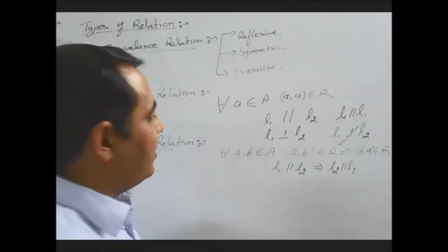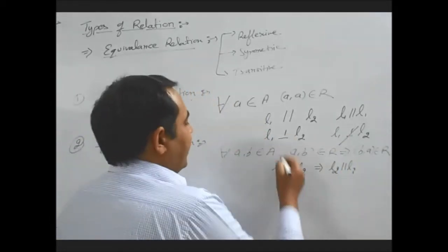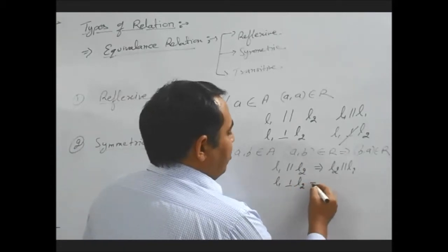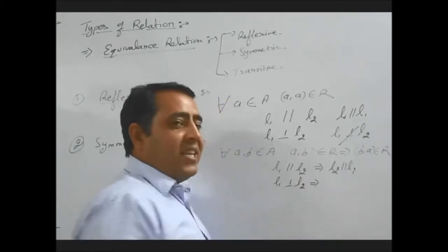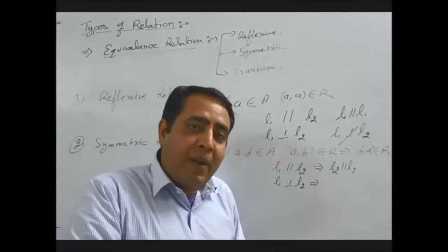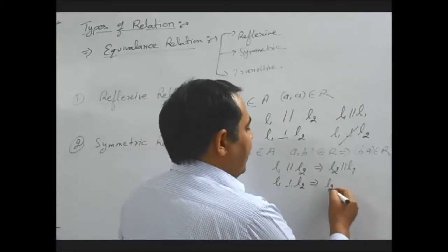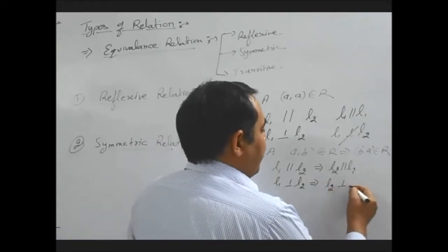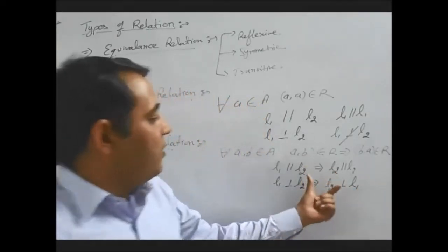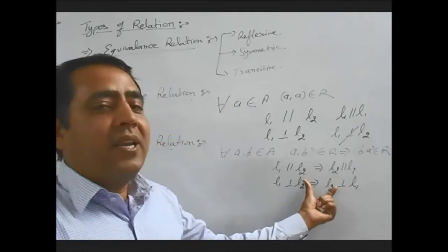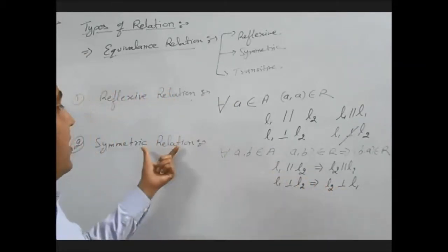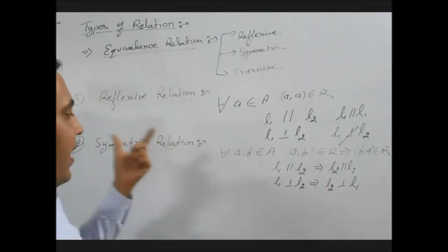What about perpendicularity? If line 1 is perpendicular to line 2, then line 2 is also perpendicular to line 1. It means L2 is also perpendicular to L1. So it follows the symmetric property, and therefore this type of relation is also a symmetric relation.